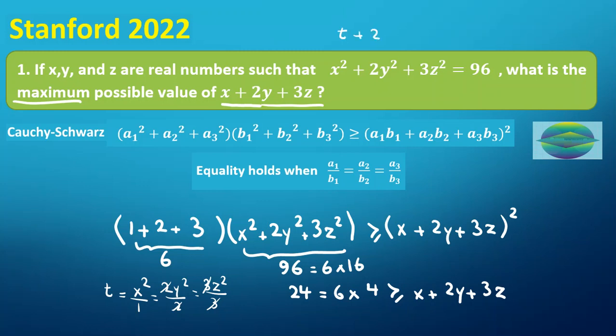It will be t + 2t + 3t = 96 from the assumption. We can say t + 2t + 3t = 6t, so 6t = 96. Therefore, t = 96/6 = 16.